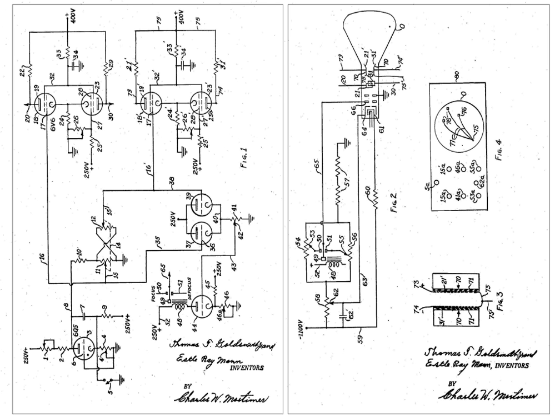In 1952, Alexander S. Douglas created OXO, a software program for the Electronic Delay Storage Automatic Calculator (EDSAC) computer, which simulates a game of tic-tac-toe. The EDSAC was one of the first stored-program computers with readable and writable memory, and filled an entire room. It included three 35x16 dot matrix cathode ray tubes to graphically display the state of the computer's memory. As part of a thesis on human-computer interaction, Douglas used one of these screens to portray game state to the user. The player entered input using a rotary telephone controller, selecting which of the nine squares on the board they wished to move next, with their move appearing on screen followed by the computer's move. The game was only available at the University of Cambridge's Mathematical Laboratory by special permission, as the EDSAC could not be moved.